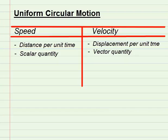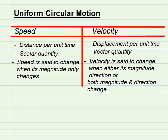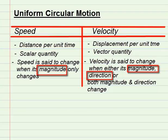When is speed said to change? Speed is said to change when its magnitude only changes. Velocity, on the other hand, is said to change when either its magnitude changes, or direction changes, or both magnitude and direction change. Speed is only said to change when its magnitude changes, but velocity is said to change in three ways: when its magnitude changes but direction remains the same, when the direction changes and magnitude remains the same, or when both magnitude and direction change.